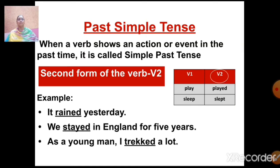Let us first understand simple past tense. When a verb shows an action or event in the past time, it is called simple past tense. In simple terms, any action that has taken place in the past is called simple past tense. The formula is the second form of verb, also called V2. For example, the first form is 'play' (V1), and the second form will be 'played'. Another example: 'sleep' — the second form is 'slept'.